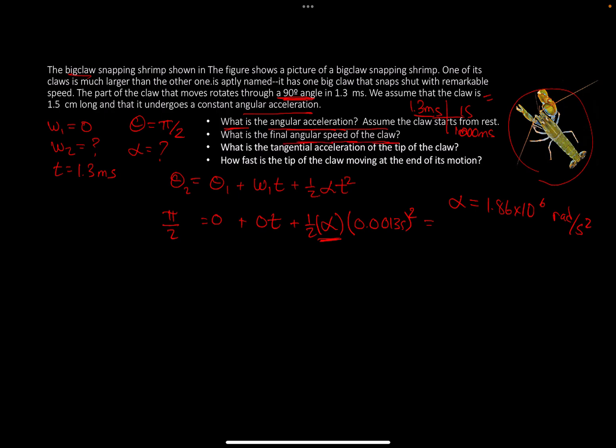What's the final angular speed of the claw? For angular speed w₂, we use the equation w₂ = w₁ + αt. This is zero plus 1.86 × 10⁶ times 0.0013 seconds, which gives 2416 radians per second. That's the angular speed. Angular speed is in radians per second, angular acceleration is radians per second squared.